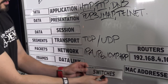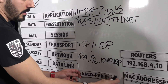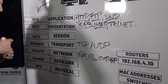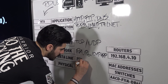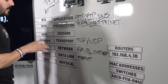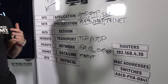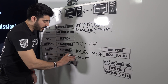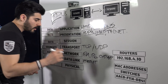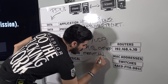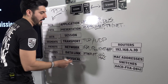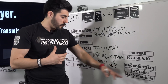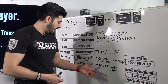On the data link layer, MAC addresses are used. The protocol commonly used here is Ethernet. The data link layer is also divided into two sublayers: LLC — Logical Link Control — on top, and MAC — Media Access Control — below. We also have switches and physical addressing at this layer.